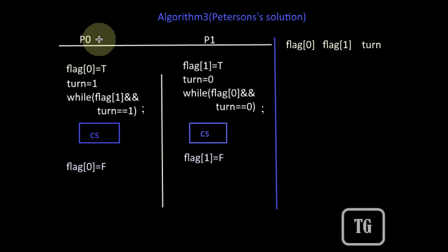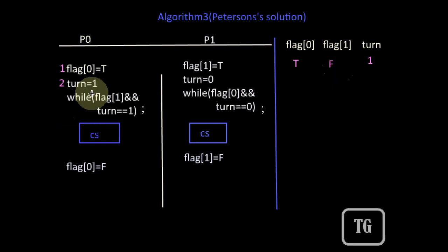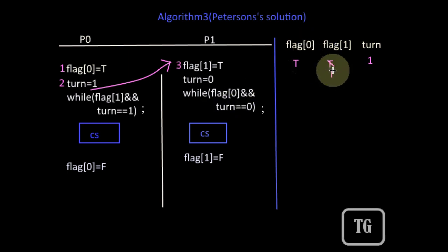Consider this sample sequence. P0 needs to enter the critical section, so it will set its flag to true — flag[0] is now true. Then it will execute the next instruction: turn = 1. Now flag[1] is actually false here, so P0 could have entered the critical section. But before executing the while loop, suppose a preemption occurred and P0 lost its processor. P1 gained the processor and is also wishing to enter the critical section. P1 sets its flag to true — flag[1] is also true. Thus both the flags are set to true at the same time.